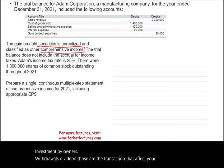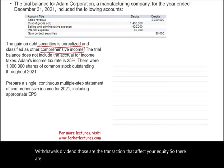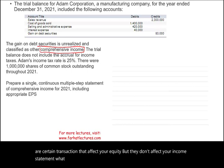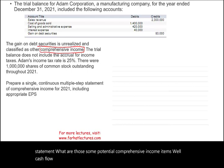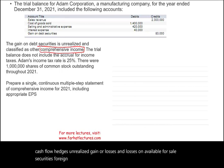There are certain transactions that affect your equity but don't affect your income statement. What are some potential comprehensive income items? Cash flow hedges, unrealized gains or losses on available-for-sale securities, and foreign currency translation adjustments.